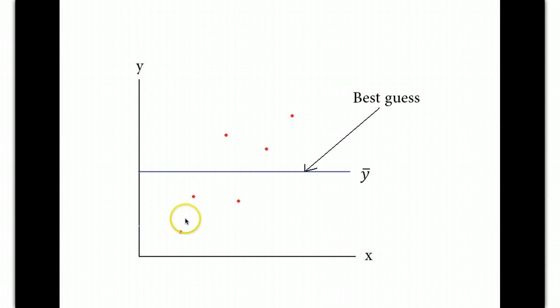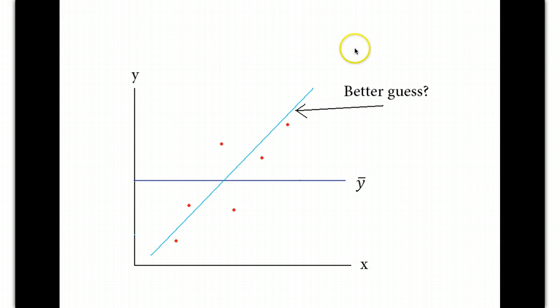So I would like to describe it with something in more detail than y-bar. I would like to ask the person the question, well, for which value of x are you talking about? For high values of x, we would tend to have high values of y. So let's just start by drawing a line like this. Is this a better guess?